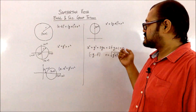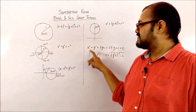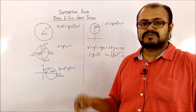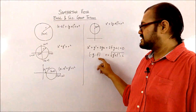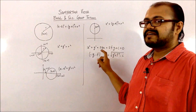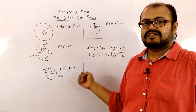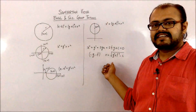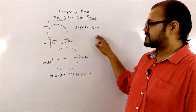The general standard equation of a circle is x² + y² + 2gx + 2fy + c = 0. It has second-degree terms in x and y, single-degree terms in x and y, and a constant. The center of this circle is (-g, -f): take the coefficient of x, divide by 2, and apply a minus sign; do the same for y. The radius is given by the formula √(g² + f² - c).